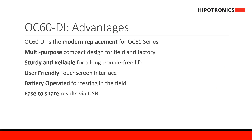The OC60 DI is the modern replacement of the OC60 series. Its compact design allows for multipurpose use whether in the field, factory, or laboratory. The sturdy and reliable casing has been retained, which customers have appreciated, and the touchscreen interface is very user friendly. The battery now included as a standard feature allows for field testing, and results can easily be shared via USB or by printing.